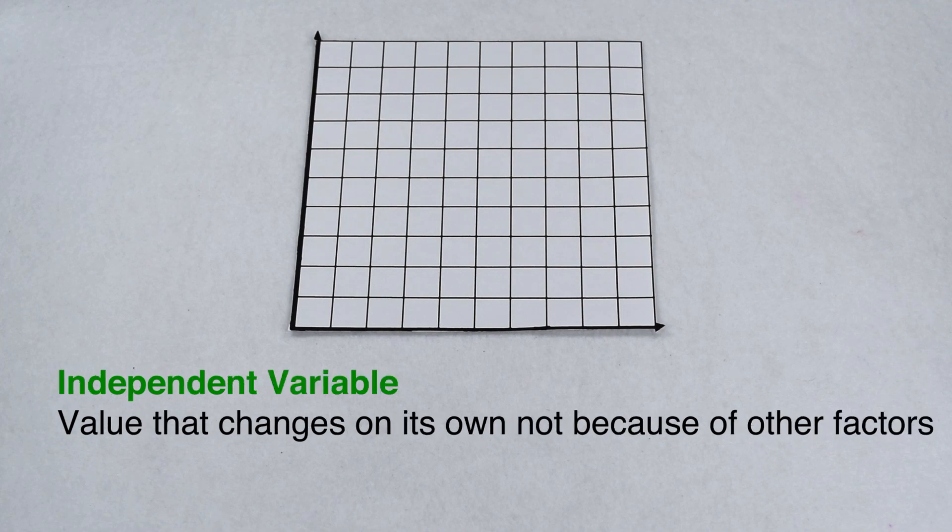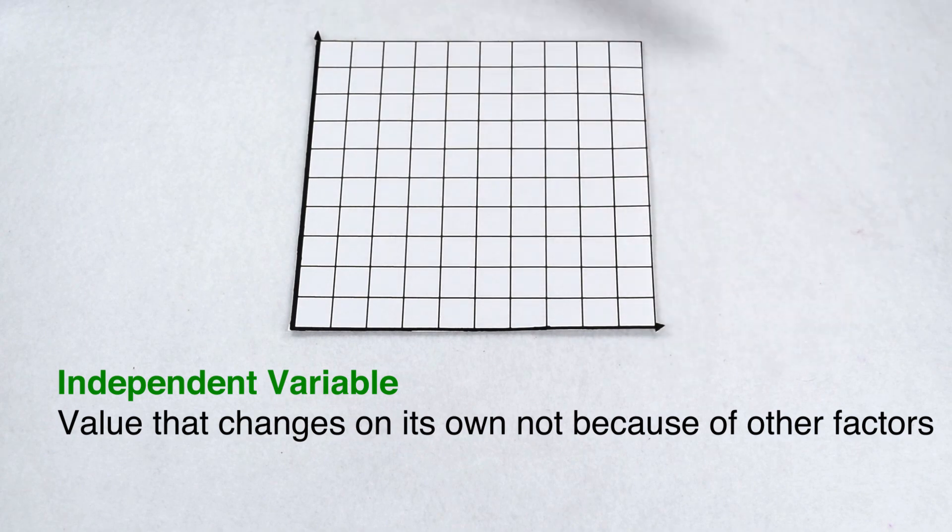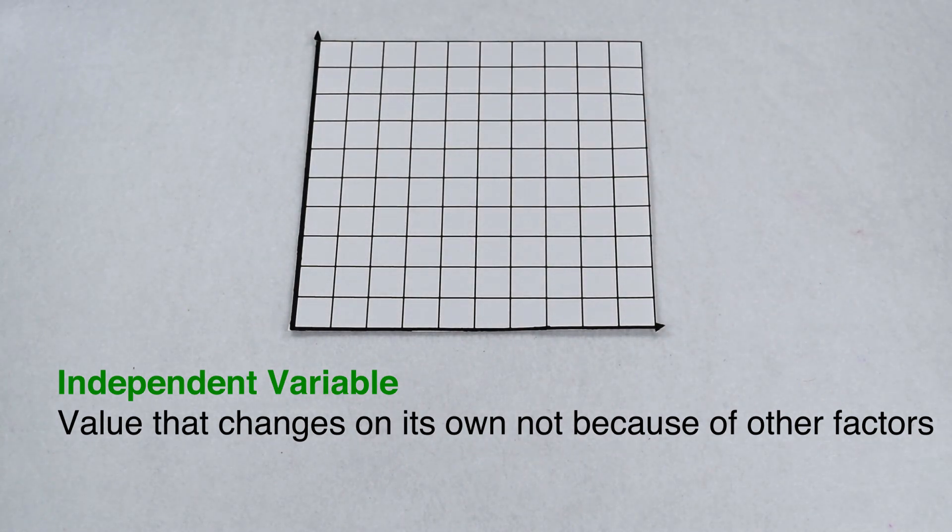When we graph our data, our independent variable is going to go on the x axis. An independent variable is one that stands alone. It changes on its own, not because of other things.